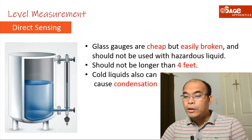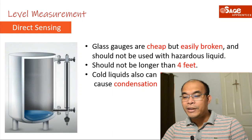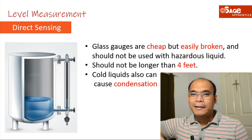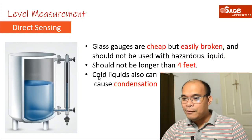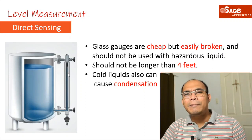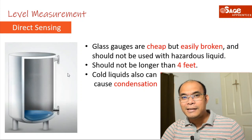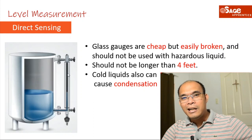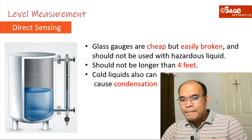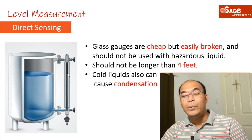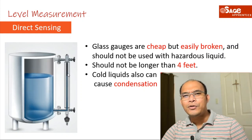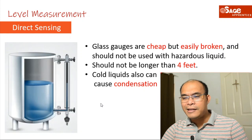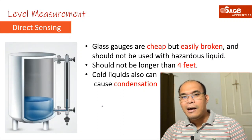Cold liquids can also cause condensation on the sight glass, making it difficult to read. This is similar to when you're driving in a cold area and your window fogs up — you need to wipe it to see clearly. So in cold environments, the sight glass is problematic because condensation creates moisture on the glass surface.